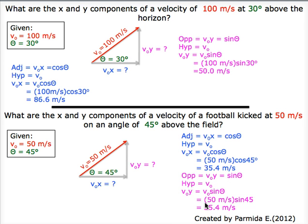Then we have the y component, which is v naught sine theta again, which is 50 meters per second times the sine of 45 degrees, which is equal to 35.4 meters per second. The x and y components both happen to equal 35.4 meters per second for this example because the cos of 45 degrees and the sine of 45 degrees are both the same number.